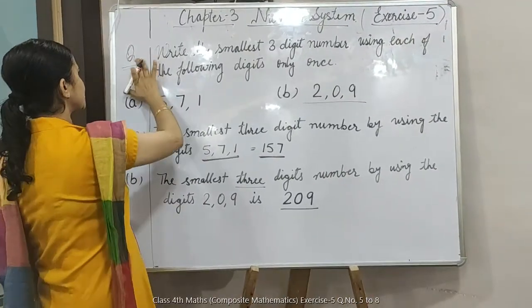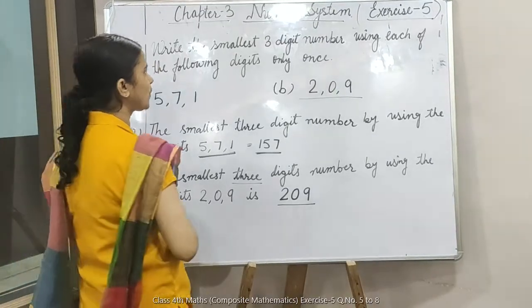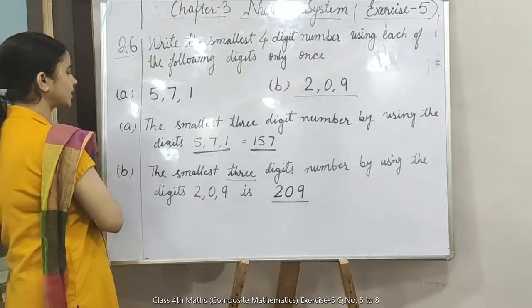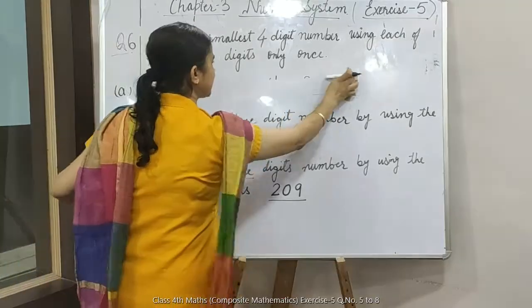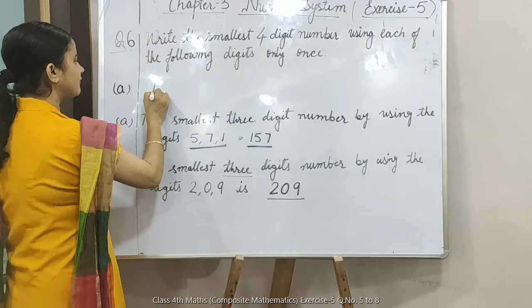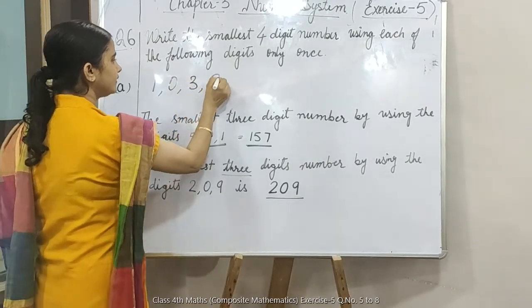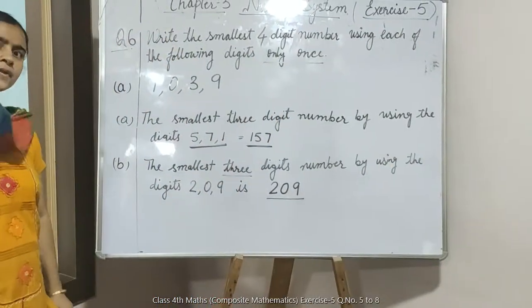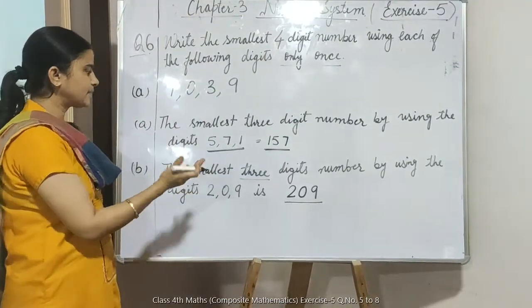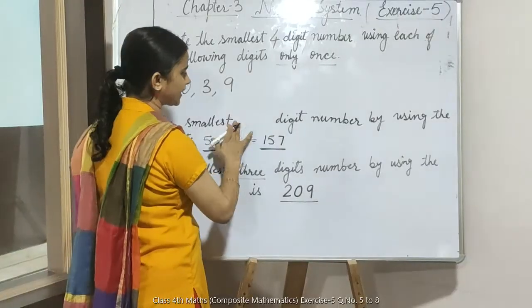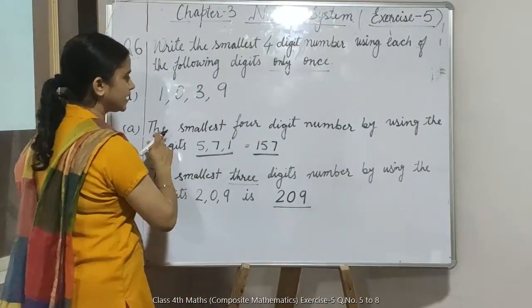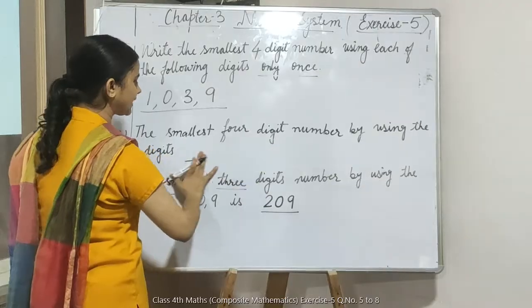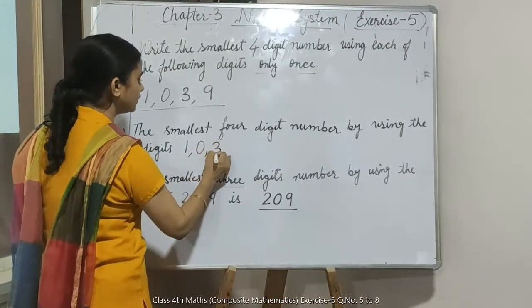Question number 6 में आपको 4-digit number बनाने हैं। अगर example लें: digits हैं 1, 0, 3, 9। हमें 4 digits मिली हुई हैं और हर digit को एक ही बार यूज करना है। Statement होगी: the smallest 4-digit number by using the digits 1, 0, 3, 9 is।